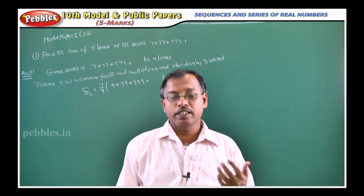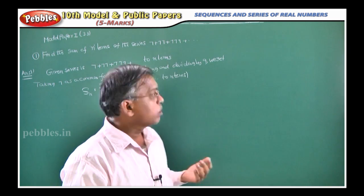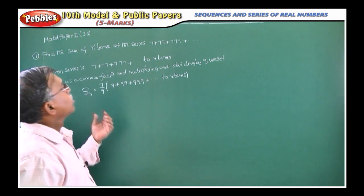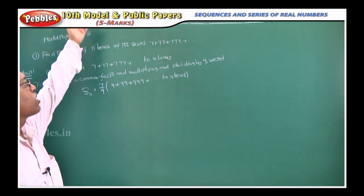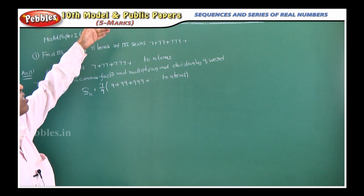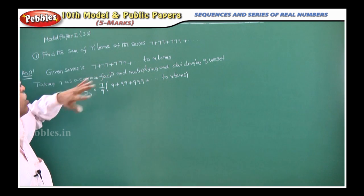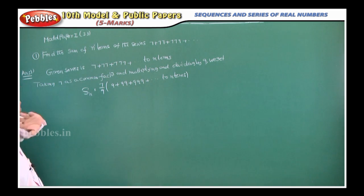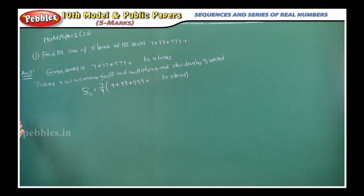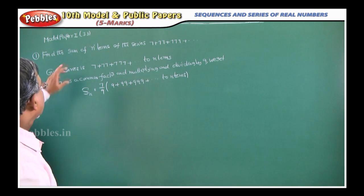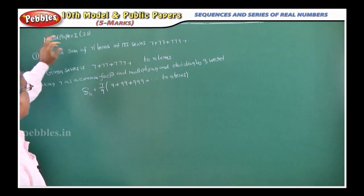We will start the 5-mark questions in the second chapter: sequences and series of real numbers. In the examination, they will ask two 5-mark questions in this. We will see model paper-wise — model paper 1, question number 33.